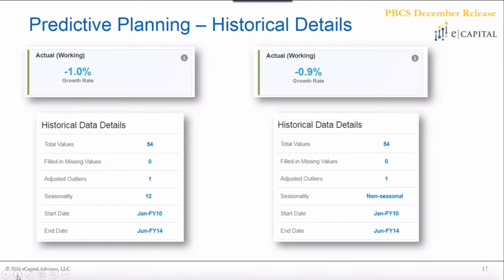Just like predictive details, you can access information behind the historicals as well. This is helpful to understand if there are large outliers that will be excluded when generating predictions and recommendations. For both revenue streams, there is one outlier each. For the hardware stream, seasonality is detected; for the other stream, it is not. You can also see the start and end dates of the historical data set used for benchmarking, and you can modify those dates as well.